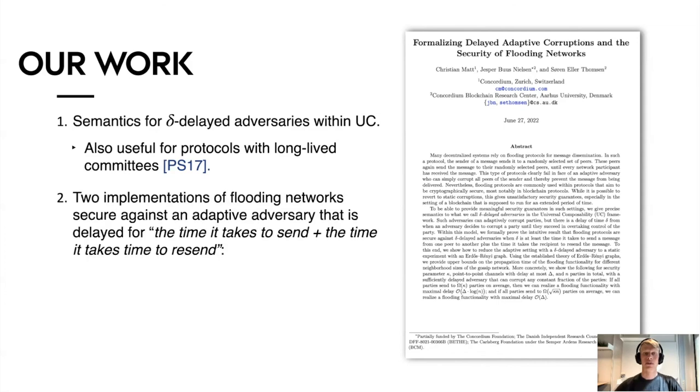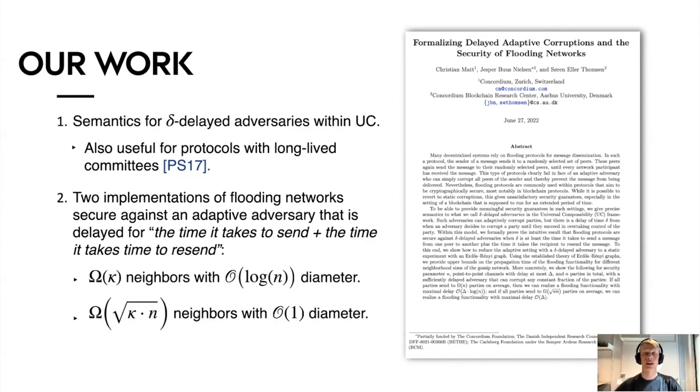Secondly, we provide two implementations of flooding networks within this model that are secure against an adaptive adversary delayed for the time it takes to send plus the time it takes to re-send. The first implementation has constant neighborhood with a logarithmic diameter, whereas the second implementation has a square root number of neighbors with a constant diameter.